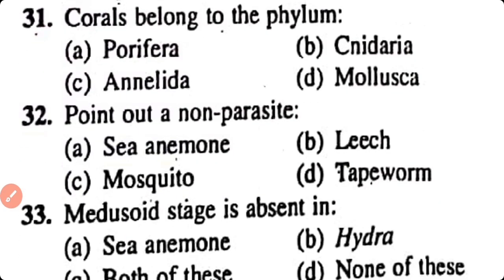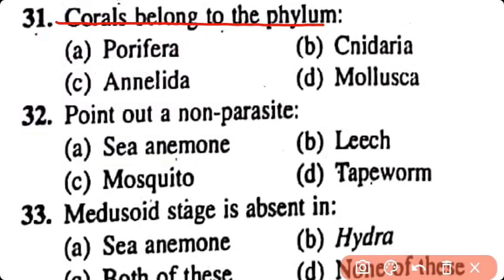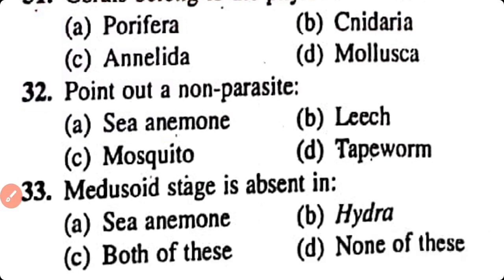Question number 31. Corals belong to the phylum: Porifera, Cnidaria, Annelida, Mollusca. Option B. Corals belong to the class Anthozoa, phylum Cnidaria.